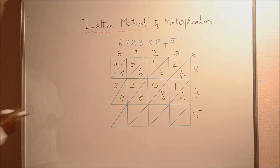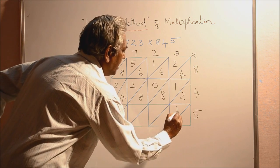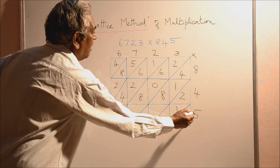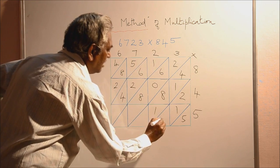Now the third row. 5, 3's are 15. That is 1 here and 5 here. 5, 2's are 10, 1, 0.